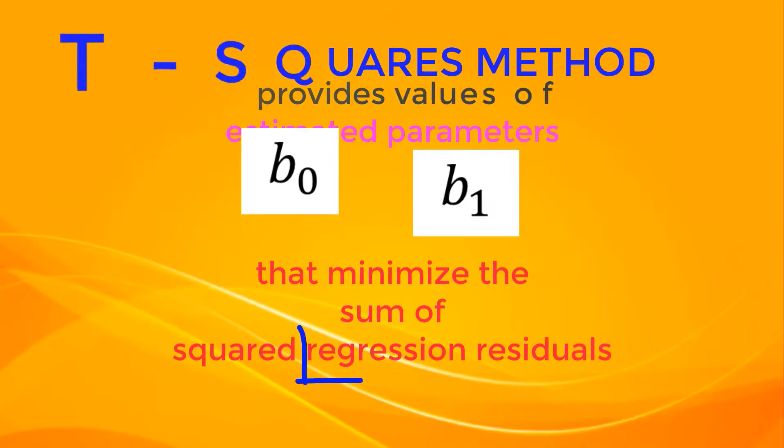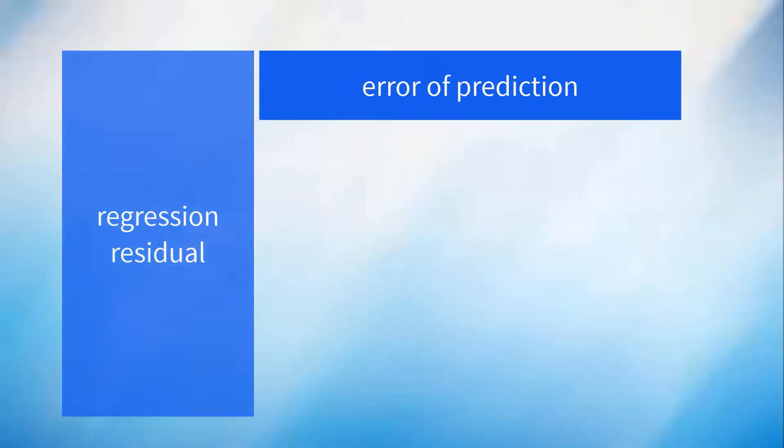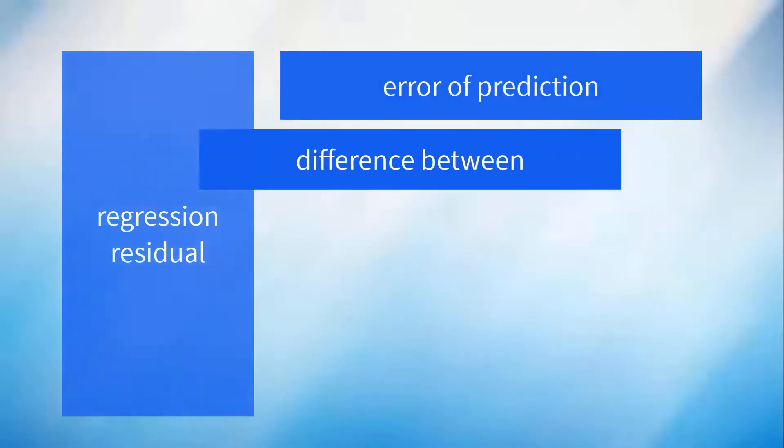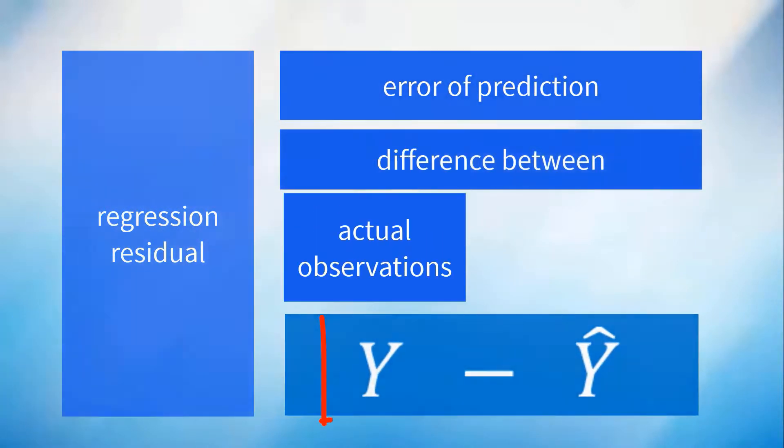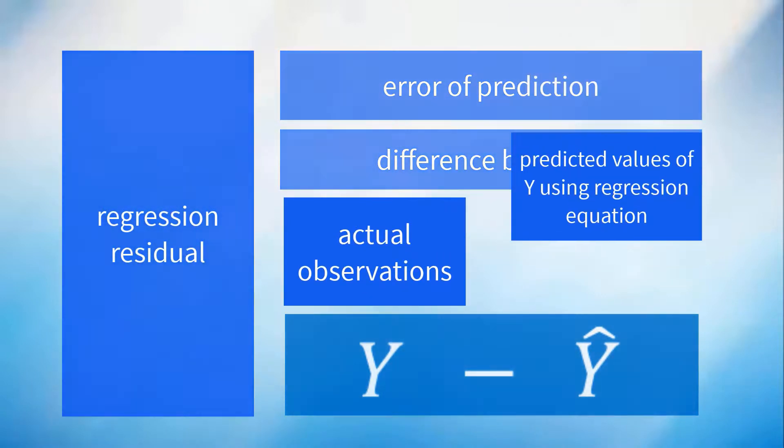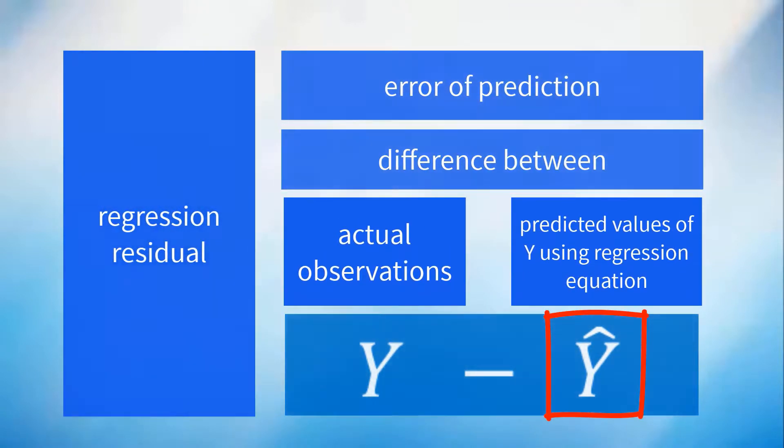What is regression residual? Regression residual is the error of prediction using the regression equation. It is the difference between actual observation denoted by y and predicted values in regression line denoted by y hat.